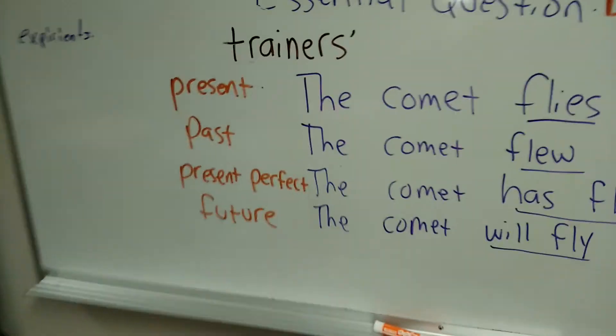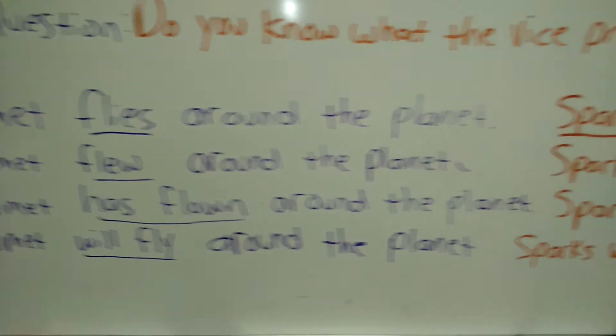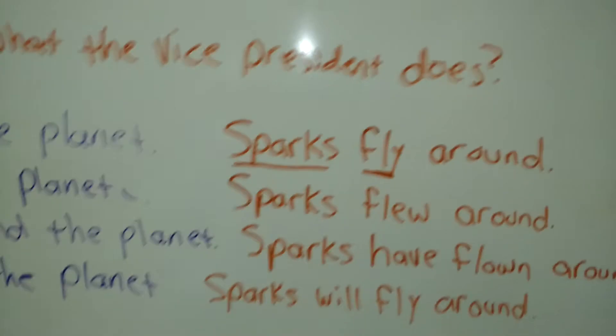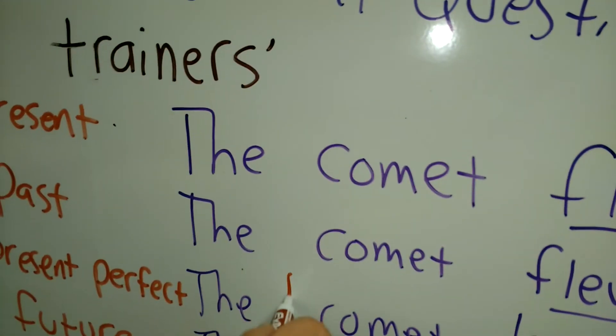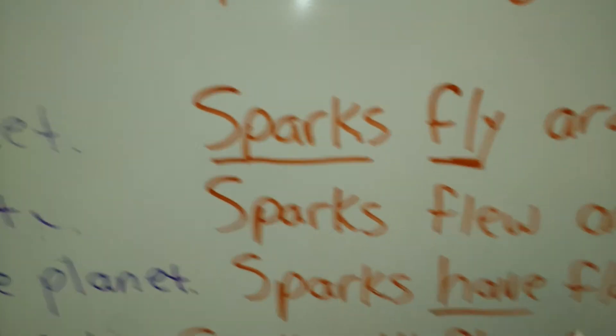For the present perfect, the comet has flown around the planet. Sparks have flown around. So you see the difference here. We have has, because this is one. And over here, we have have.